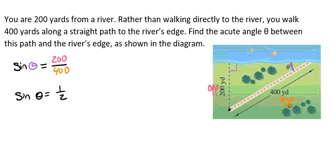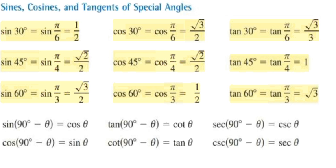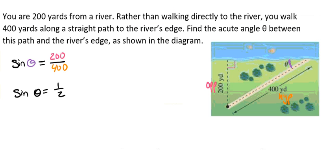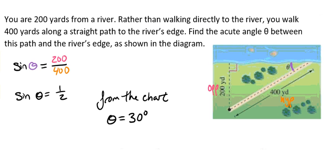So now we want to know what gives us a sine of theta equals 1 half. And if we go back to our sines, cosines, and tangents of special angles, we see that to get a sine with a 1 half, that tells us that the theta must be 30 degrees. And so we're able to say that from the chart, we have theta equals 30 degrees.